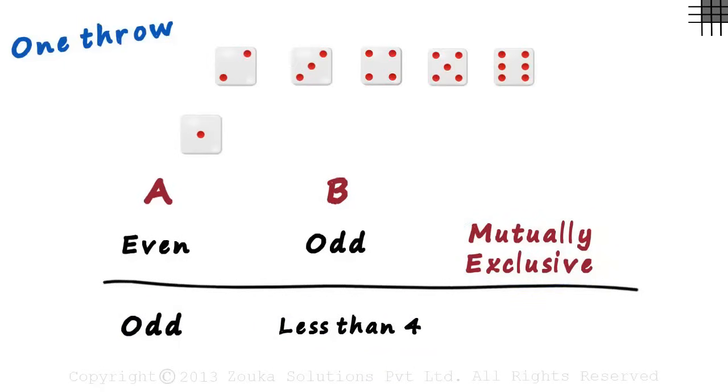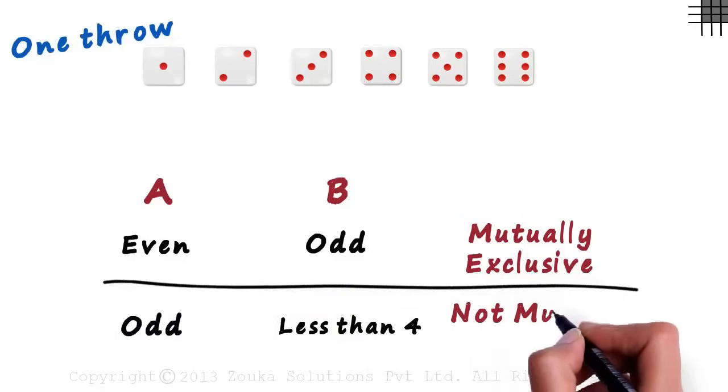If we get a 1, then we can see that it's an odd number as well as a number less than 4. It's the same if we get a 3. These two events can happen together, which tells us that they are not mutually exclusive.